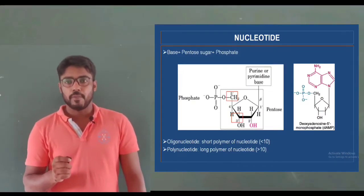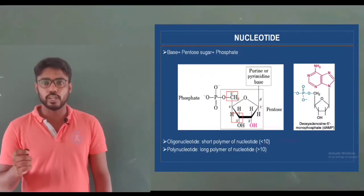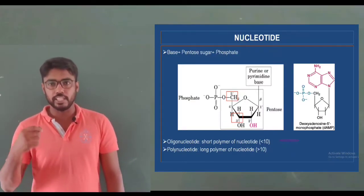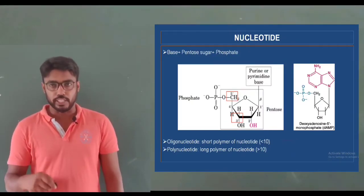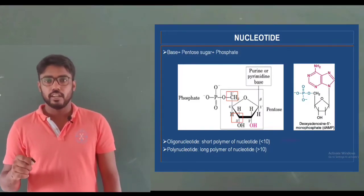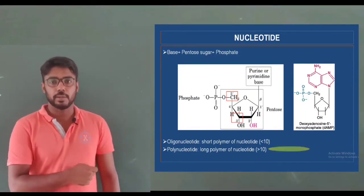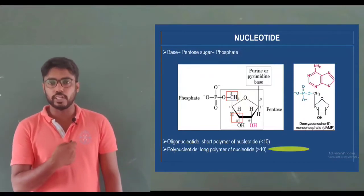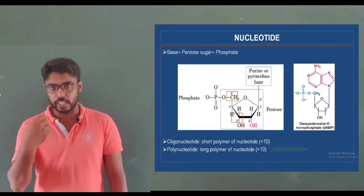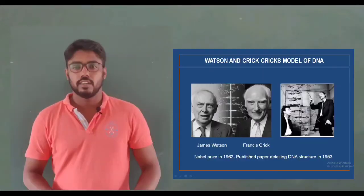You also need to learn about oligonucleotides and polynucleotides. Oligonucleotides are chains that contain fewer than 10 nucleotides. Polynucleotides are polymers of nucleotides that contain more than 10 nucleotides.